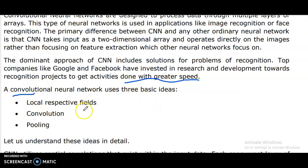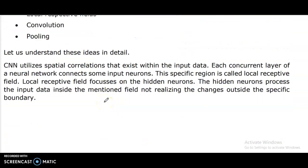Convolution is based on three key concepts: local receptive fields, convolution, and pooling. Let us understand these ideas in detail. CNN addresses spatial correlations.